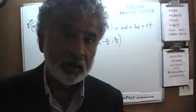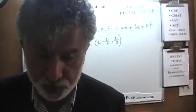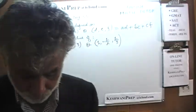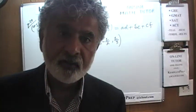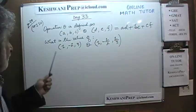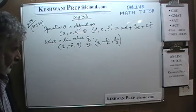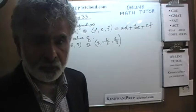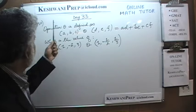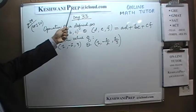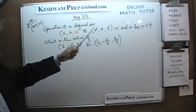Today we will solve some multiple choice problems that you will find on page number 79. Make sure the book is in front of you. Page number 79 — the very first problem you find there is problem number 110. As you can see, the problem is already on the blackboard. At the end of the video, if you find this helpful and would like to hire me as your tutor, you can reach me at KeshwaniPrep — that's P-R-E-P — KeshwaniPrep at iCloud.com.